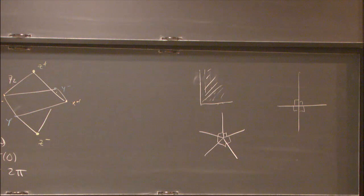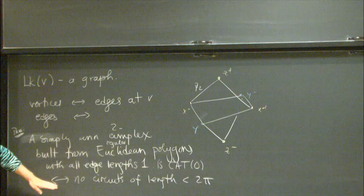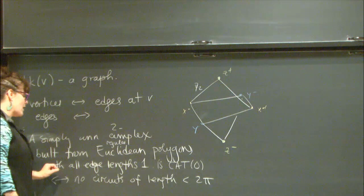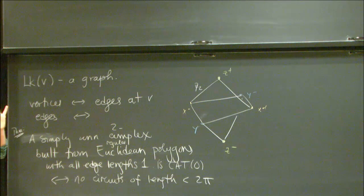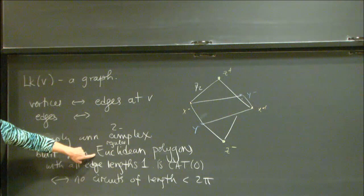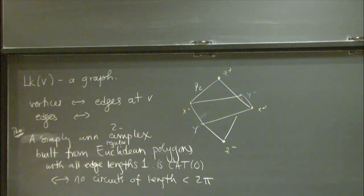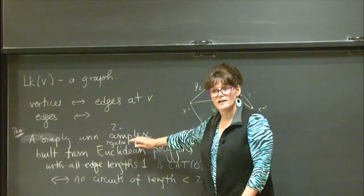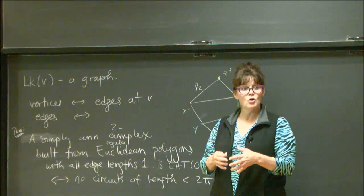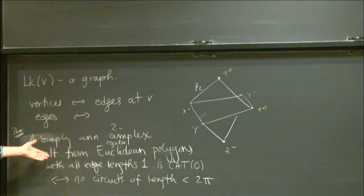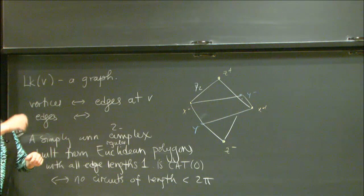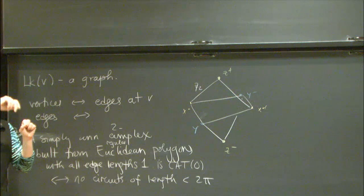To conclude the CAT(0) property, I need one extra condition: I can only use finitely many isometry types of polygons, because gluing infinitely many different types will ruin the proper geodesic part. The proper part means a locally finite complex; if only finitely many cells meet along a vertex or edge, the space is locally compact and proper. The geodesic part requires proving there's a geodesic between any two points by taking the infimum of path lengths.